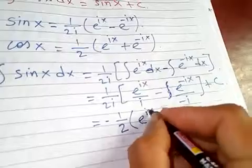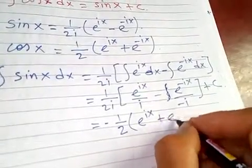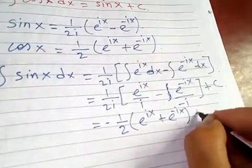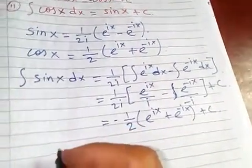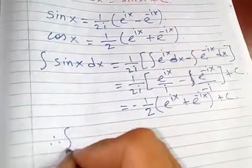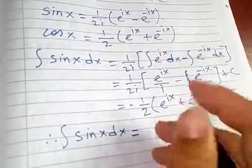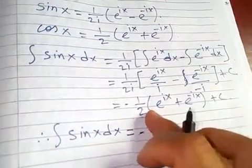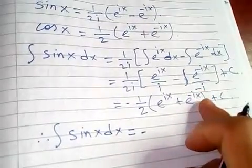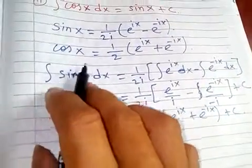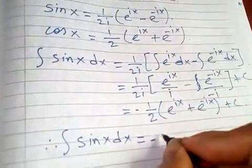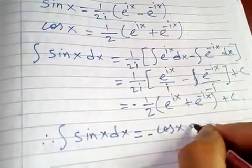Plus c. What do we get? ∫sin(x)dx equals negative times this whole thing. This is nothing but cosine, so we get -cos(x) + c.